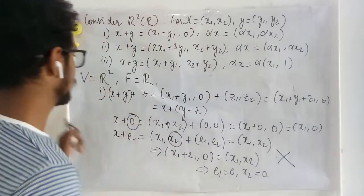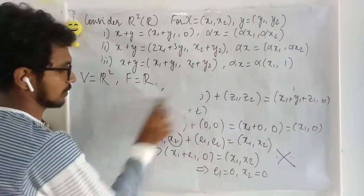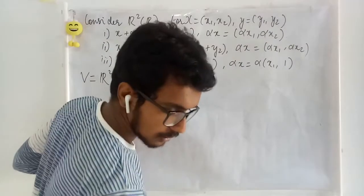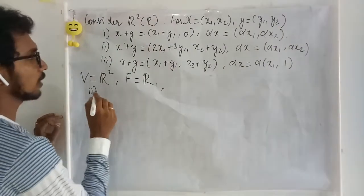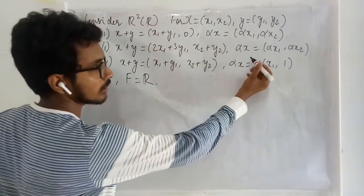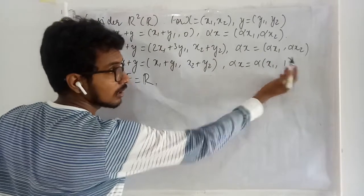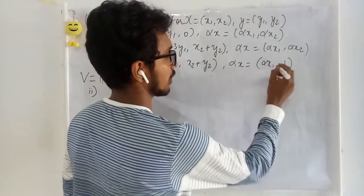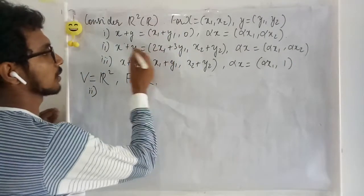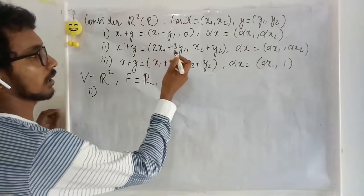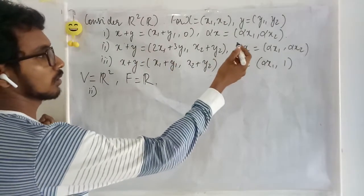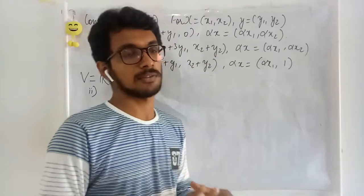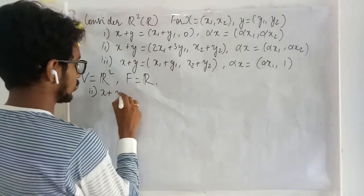Now let us look at the second example. Here scalar multiplication is defined in the usual sense, and there is a correction: in the third example that is alpha times x₁ comma 1. In this second example, since x₁, y₁, x₂, y₂ are all entries in R, closure is satisfied. Let us now check associativity.